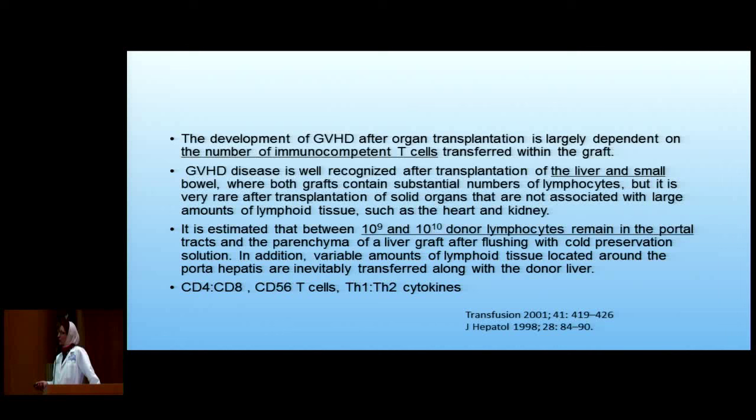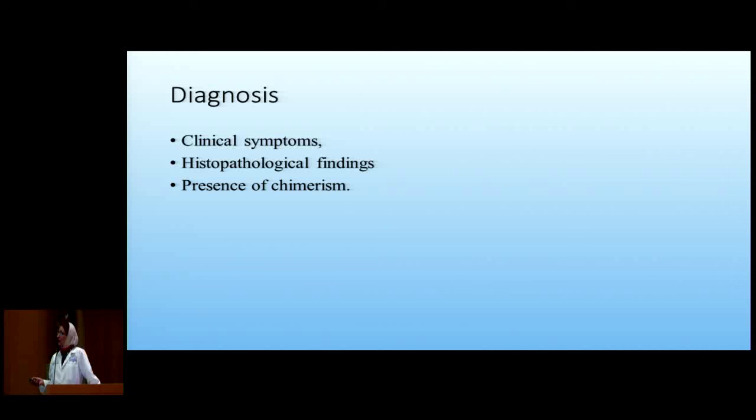In peripheral blood, CD4 is more than CD8 and T-helper-1 is more than T-helper-2. But in liver and intestines, CD8 is usually more than CD4, they have more CD56-positive T cells, and T-helper-2 is more predominant. As I mentioned, the cytokines for T-helper-2 are kind of good for acute GVHD, so that could explain the lower incidence.